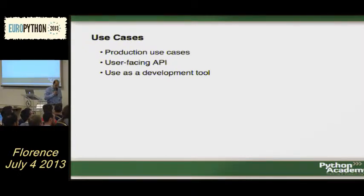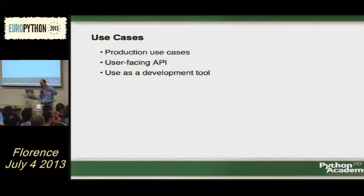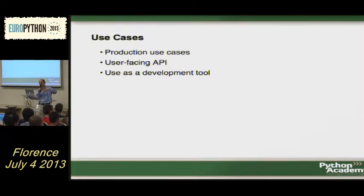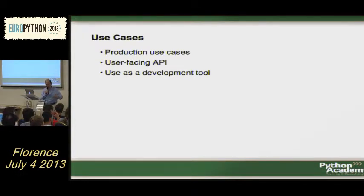I would categorize use cases in two. One is production — you really put metaclasses in production code. The other is user-facing — you write some kind of library and give the user an API using metaclasses. You have to be very careful here, because if you really change the behavior of the language and how classes work, it might be difficult for people who don't understand what's happening. If you use metaclasses for yourself in development, that's a different story.